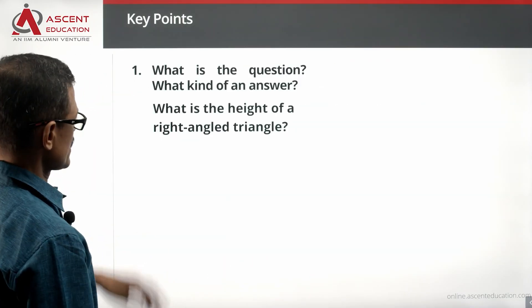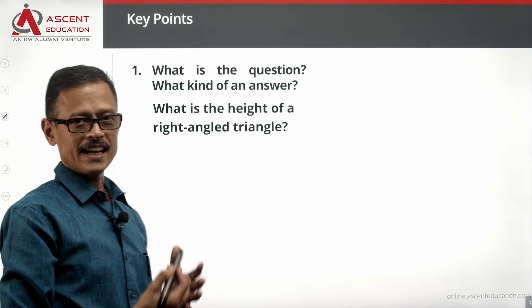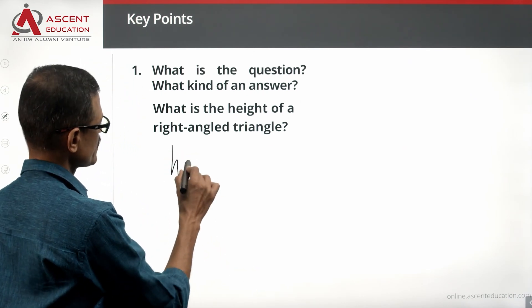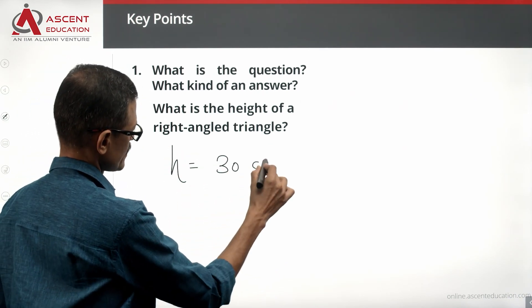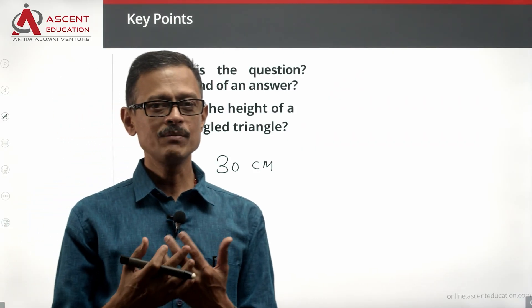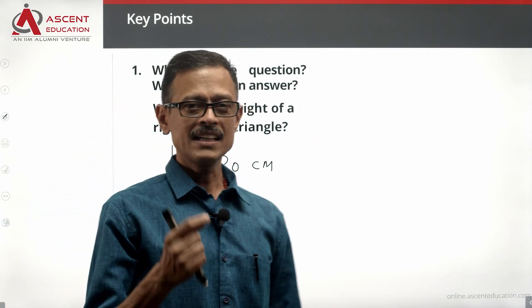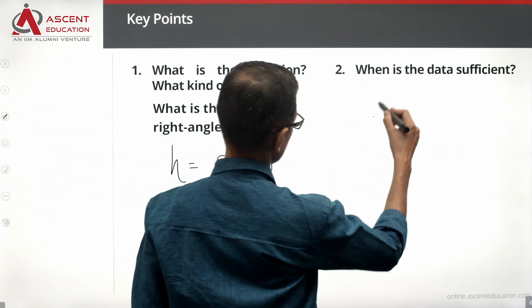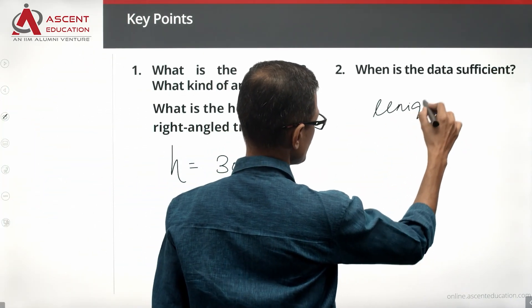Let's revisit the question: what is the height of a right triangle? If the answer to the question is a unique number — for example, height equals 30 centimeters or height equals 5 meters — then the data is sufficient. We need a unique value for sufficiency.